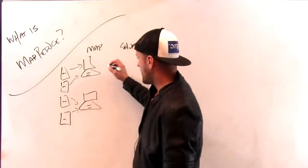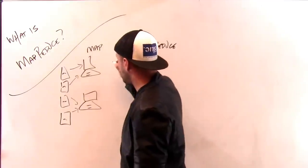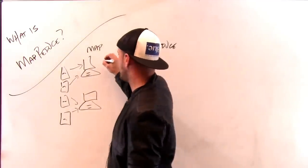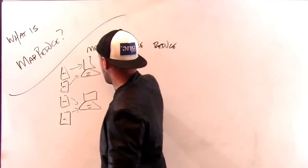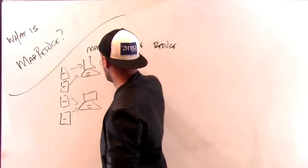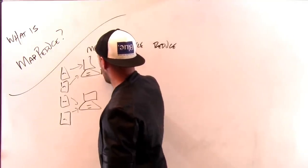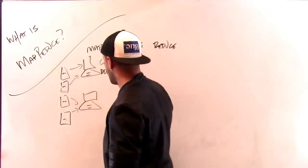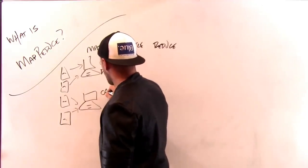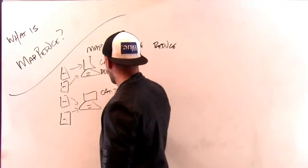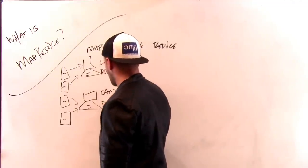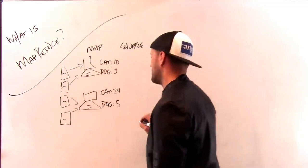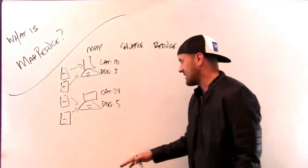What I get out here is I get a set of keys and values. The key might be the word cat appeared ten times, and the word dog appeared three times. And in these documents, the word cat appeared twenty-four times, and the word dog appeared five times. Obviously, this is a cat-loving set of documents.